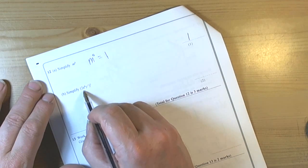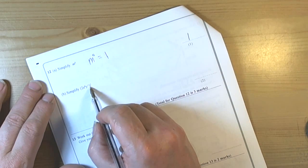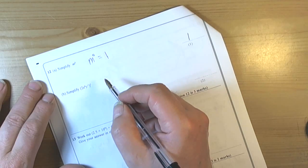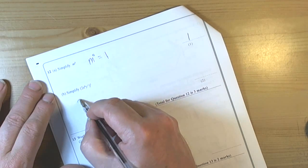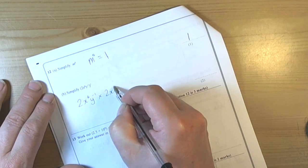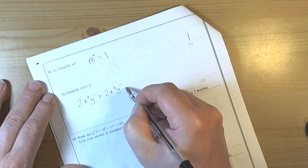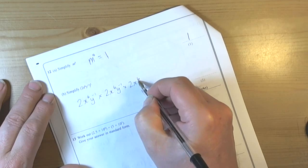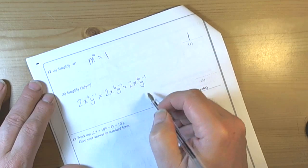This one's asking us to simplify an expression in a bracket to the power of 3. Well, this means that we're doing 2x to the 6y to the power of negative 1 times 2x to the 6y to the power of negative 1 times 2x to the power of 6y to the power of negative 1.